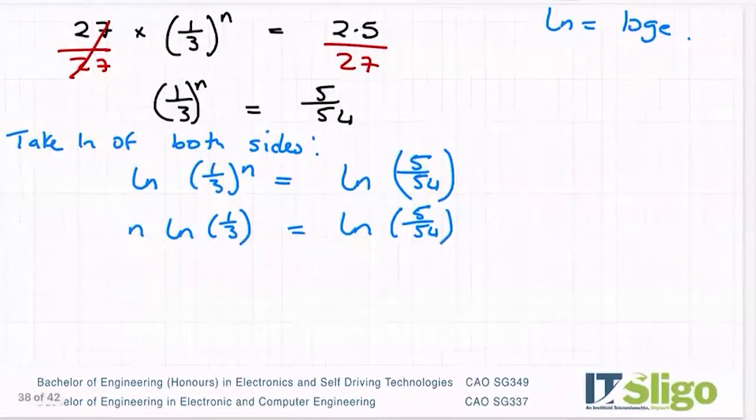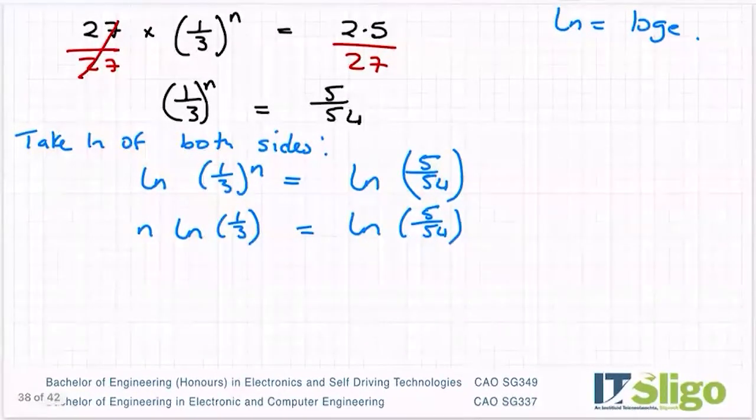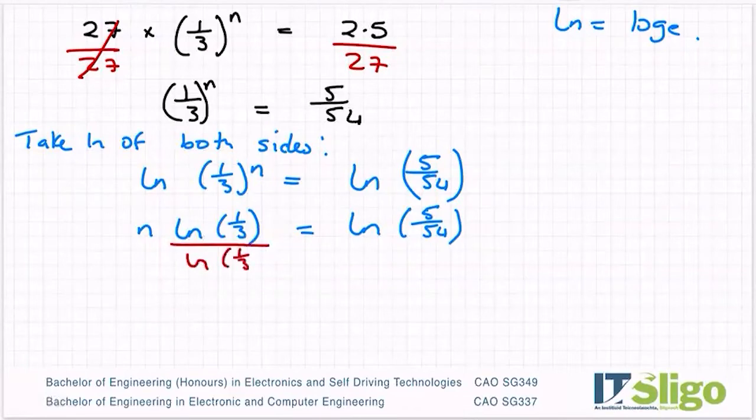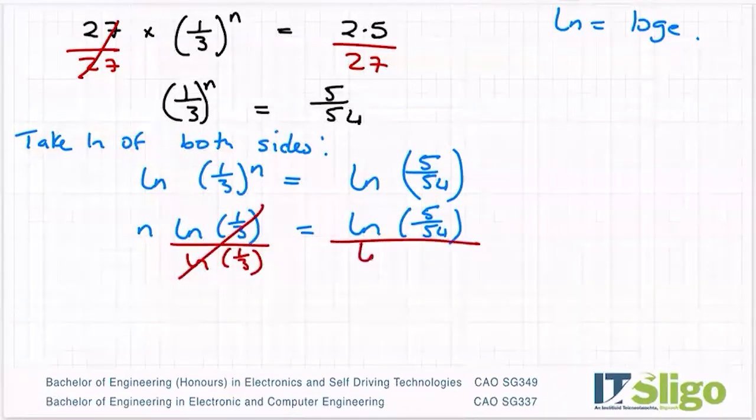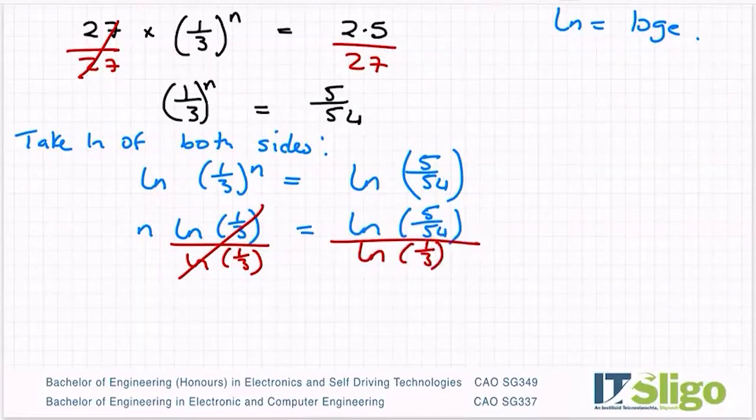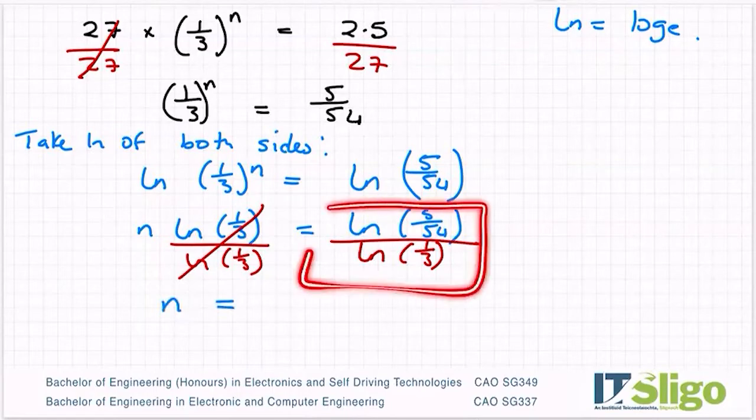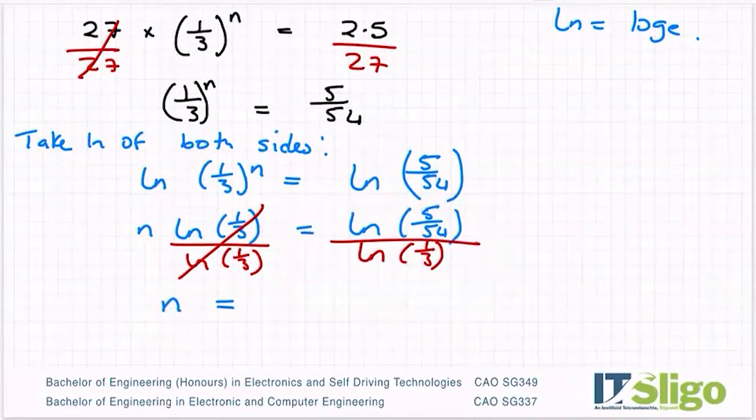And then of course, I would solve it for n then. So in other words, divide both sides by ln of a third, so that it cancels on that side. And what you do to one side, you must do to the other. So n is equal to, and you need to put this into your calculator. So hit your fraction button, ln of 5 over 54, close my bracket, and then under the line, ln again of a third, close your bracket. And I am getting n being equal to 2.165, or 2.17.